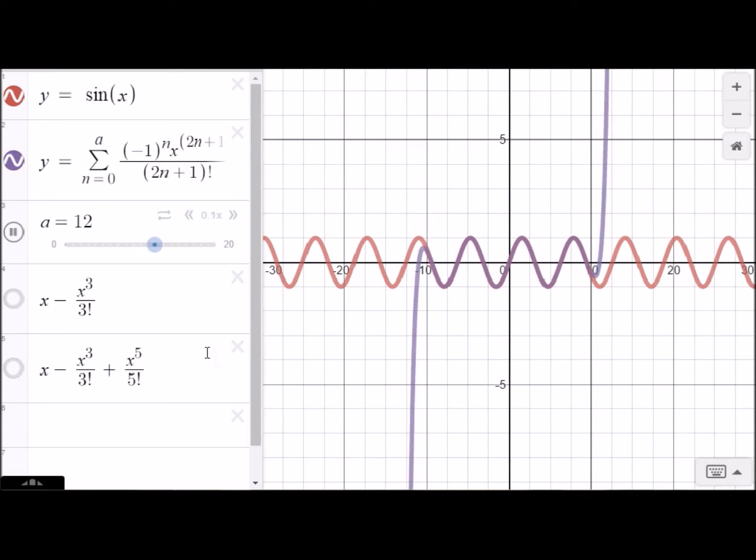We're trying to model here y equals sine x. And as we include more and more terms, it's becoming a better and better approximation for longer and longer and longer. So this is the whole idea of these Taylor polynomials. As you include more and more and more terms, it's going to give you a better and better and better approximation to the actual function that you're trying to model.